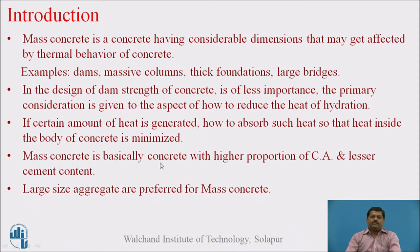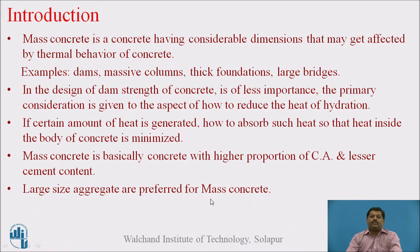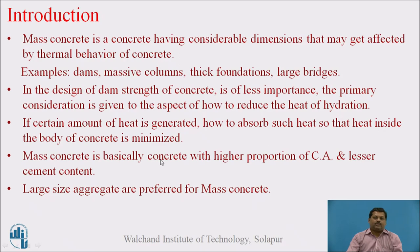Mass concrete is basically concrete with a higher proportion of coarse aggregate and lesser cement content. This is the practical aspect of mass concrete. Generally, large size aggregates are preferred for mass concrete, as the surface area of aggregate can be reduced by using larger aggregates, and because of that the cement content automatically reduces.